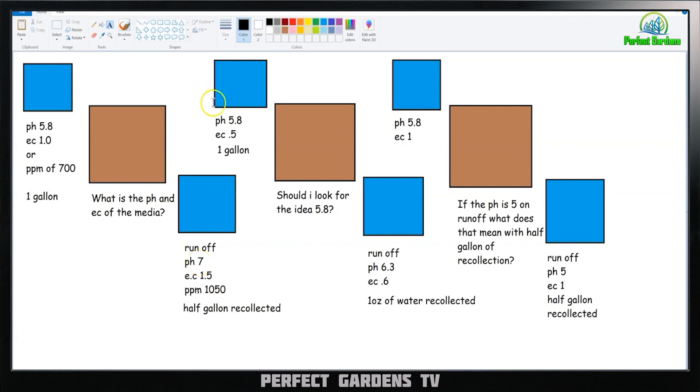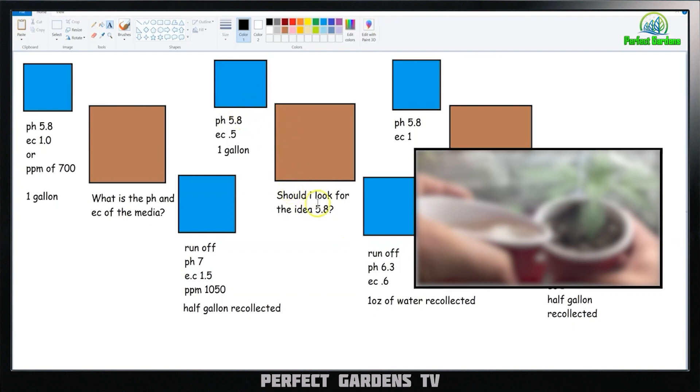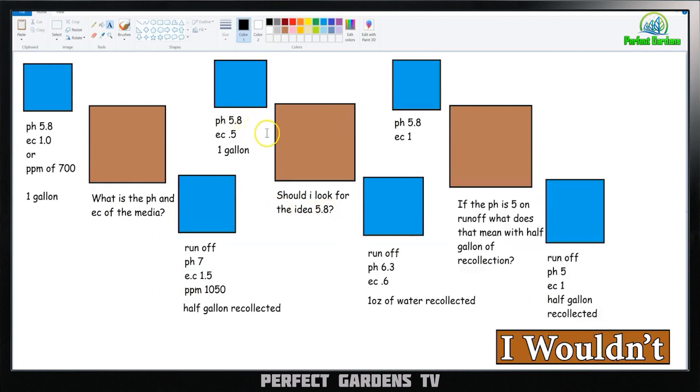Okay, so let's go ahead and take a look at your next one. Your pH is 5.5, your EC is 0.5, you run 1 gallon through your grow media, your runoff is 6.3, your EC is 0.6, and your recollection is 1 ounce of water. So what does this all mean? And should you continue to keep feeding your plants to get that ideal 5.8? For me personally, I wouldn't.